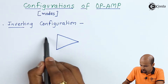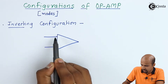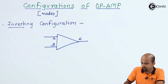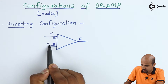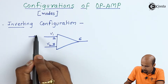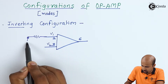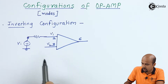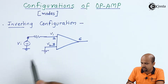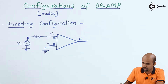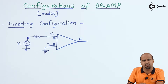This is the symbolic representation of the operational amplifier. Here the second pin is the inverting terminal, the third pin is the non-inverting terminal, and the sixth pin is the output. If I am applying the input vi to the inverting terminal with respect to ground, and I am not applying any input to the non-inverting terminal, then this is called the inverting configuration. We will study open loop and closed loop configurations later.